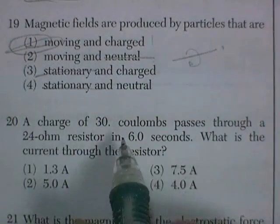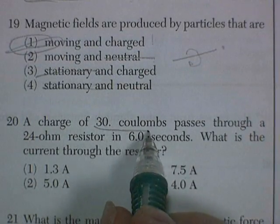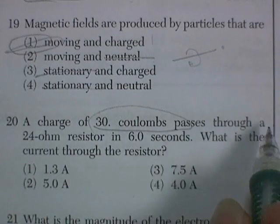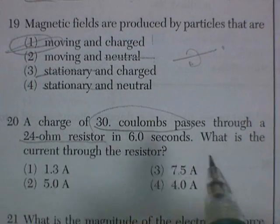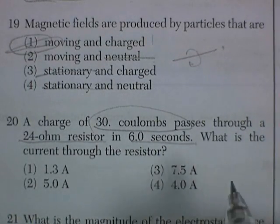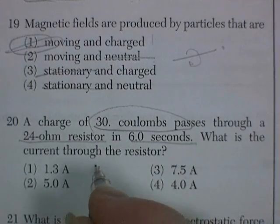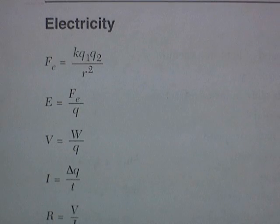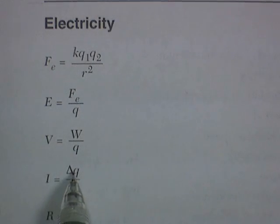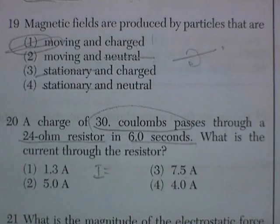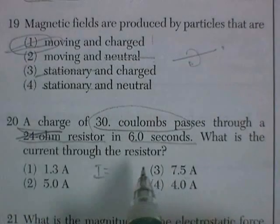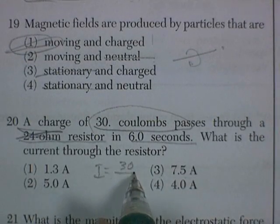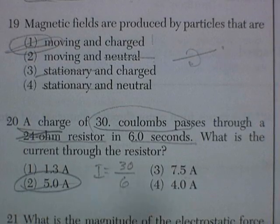Question 20. A charge of 30 coulombs pass through a 24-ohm resistor in 6 seconds. What's the current through the resistance? Hope you remember current is I. And current is change in charge over time. So I don't need the resistance. It's 30 divided by 6. Looks like 5 amps.